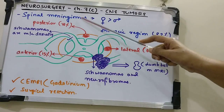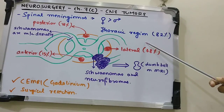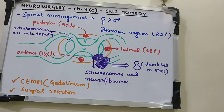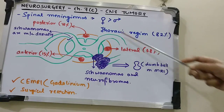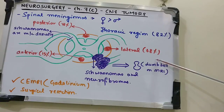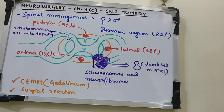Spinal meningiomas are more common in females and mainly involve the thoracic region — almost 82% of intradural extramedullary tumors occur there. Based on location relative to the spinal cord, about 68% are lateral, 18% are posterior, and only 15% are anterior.